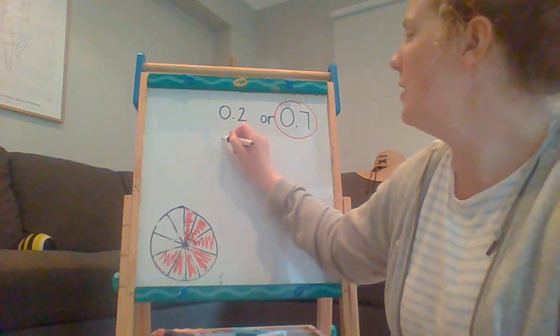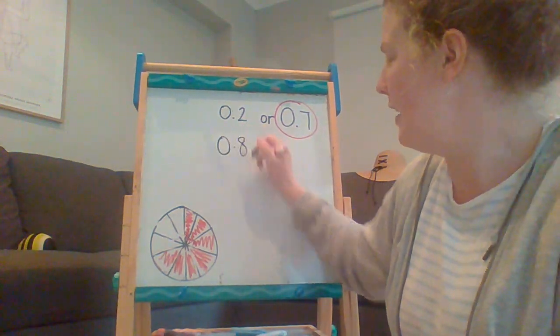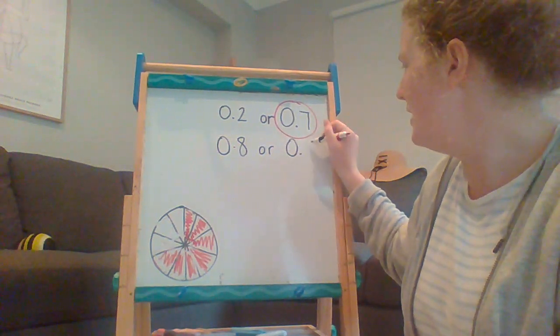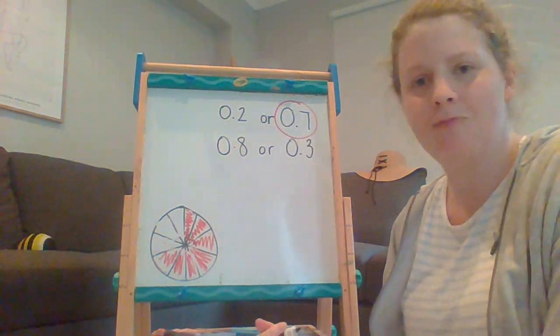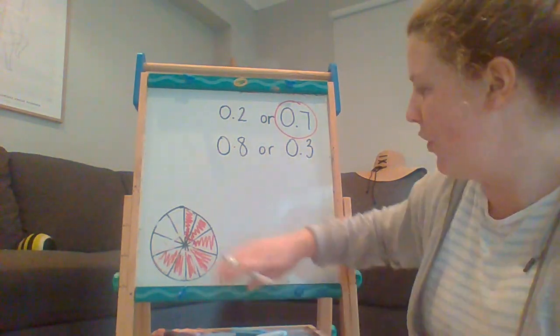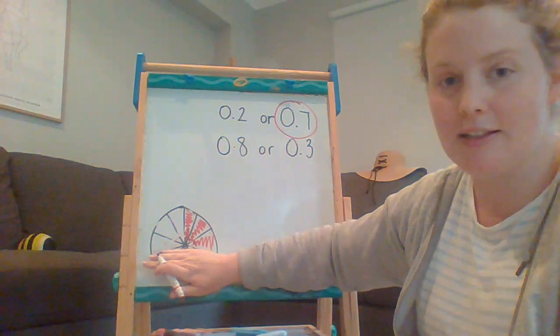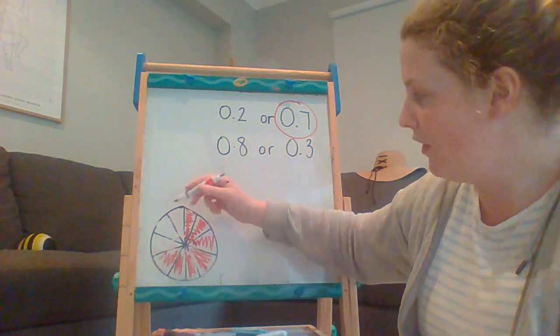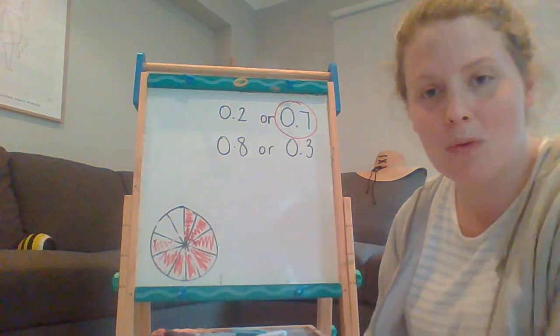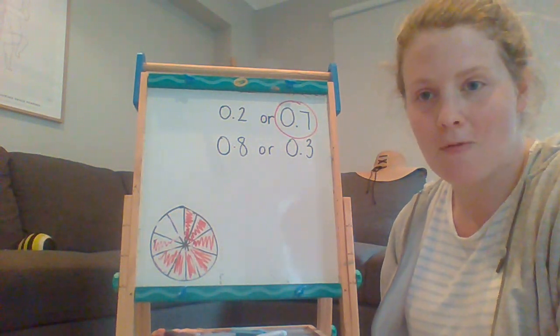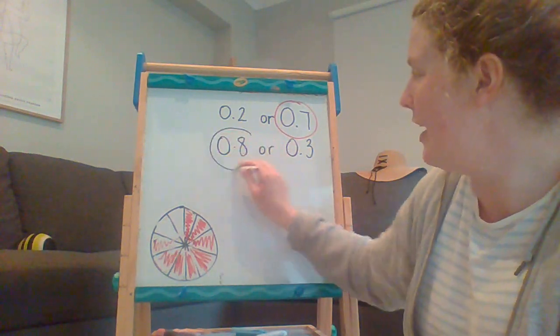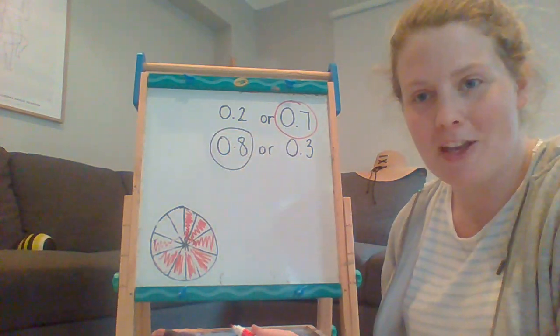All right, what about this one? 0 and 8 tenths or 0 and 3 tenths? Now, again, if I had my pie and I only ate 3 pieces, but what if I ate 8 pieces? Which one would be more? Which number is bigger? So the bigger number, if you think it's 0 and 8 tenths, you'd be correct.